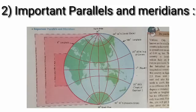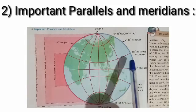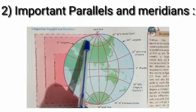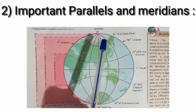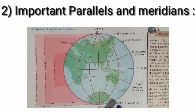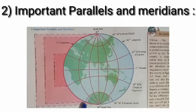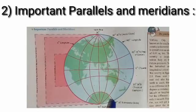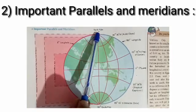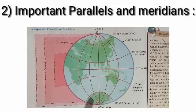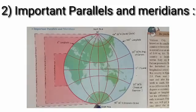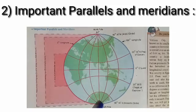Third one is Arctic Circle, the parallel at 66 degrees 30 minutes north. The Antarctic Circle is 66 degrees 30 minutes south. North Pole, 90 degrees north of the equator is north pole. And the south pole, the parallel at 90 degrees south is called south pole.